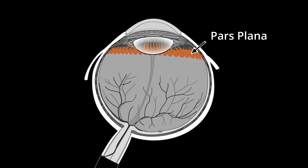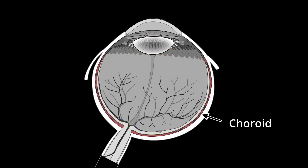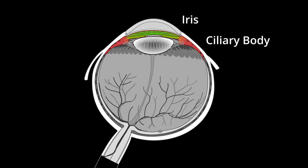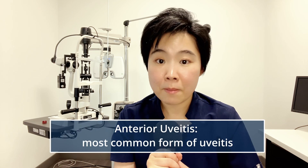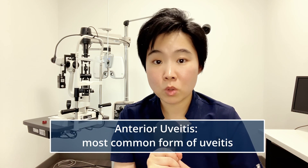There is also intermediate and posterior uveitis, which affects the pars plana, vitreous, retina, and choroid. But anterior uveitis, which affects the iris and the ciliary body, accounts for over 50% of all uveitis cases, making it the most common form of uveitis.